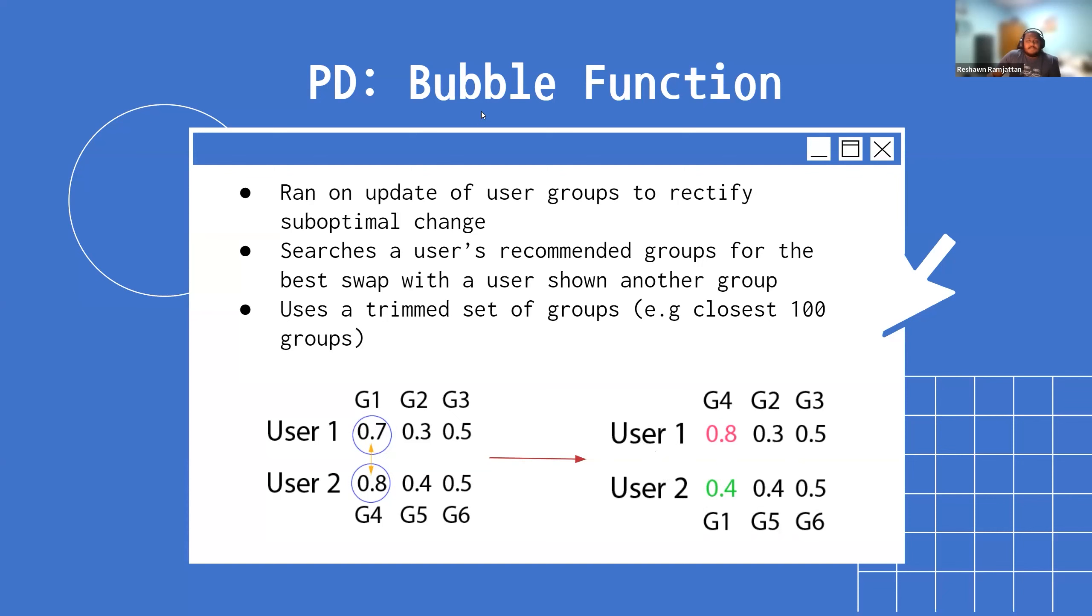This can be a very heavy function depending on the number of people in the system, so we also implemented a way to run it on a trimmed set, for example only the closest 100 groups to the person or to the new user.